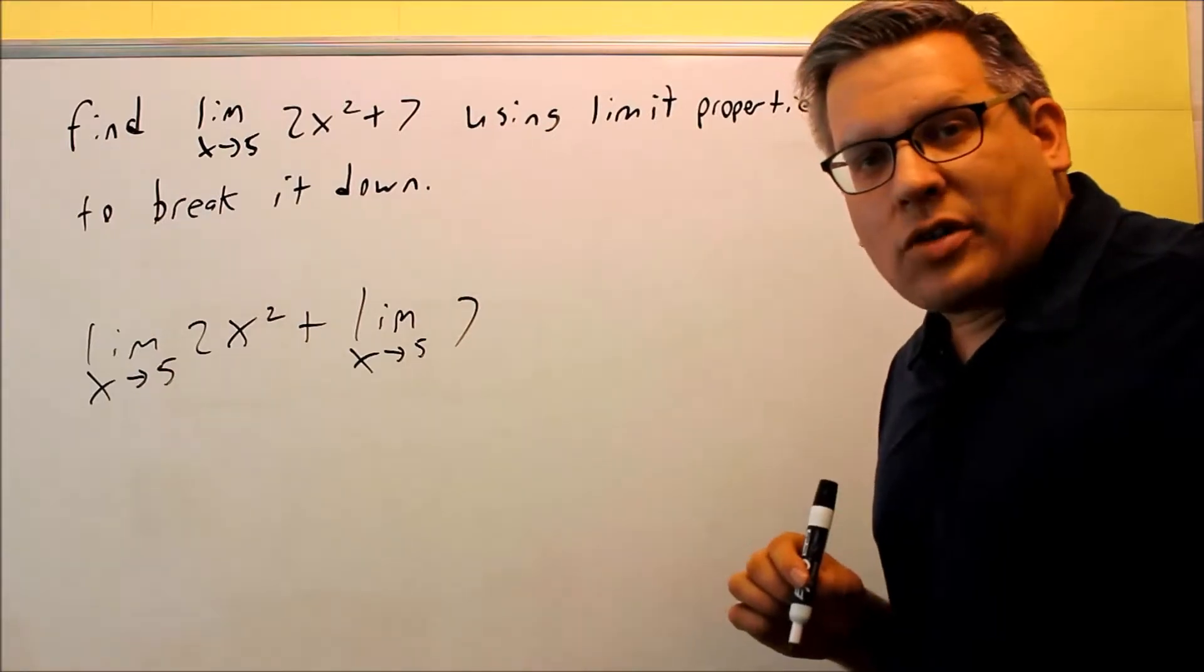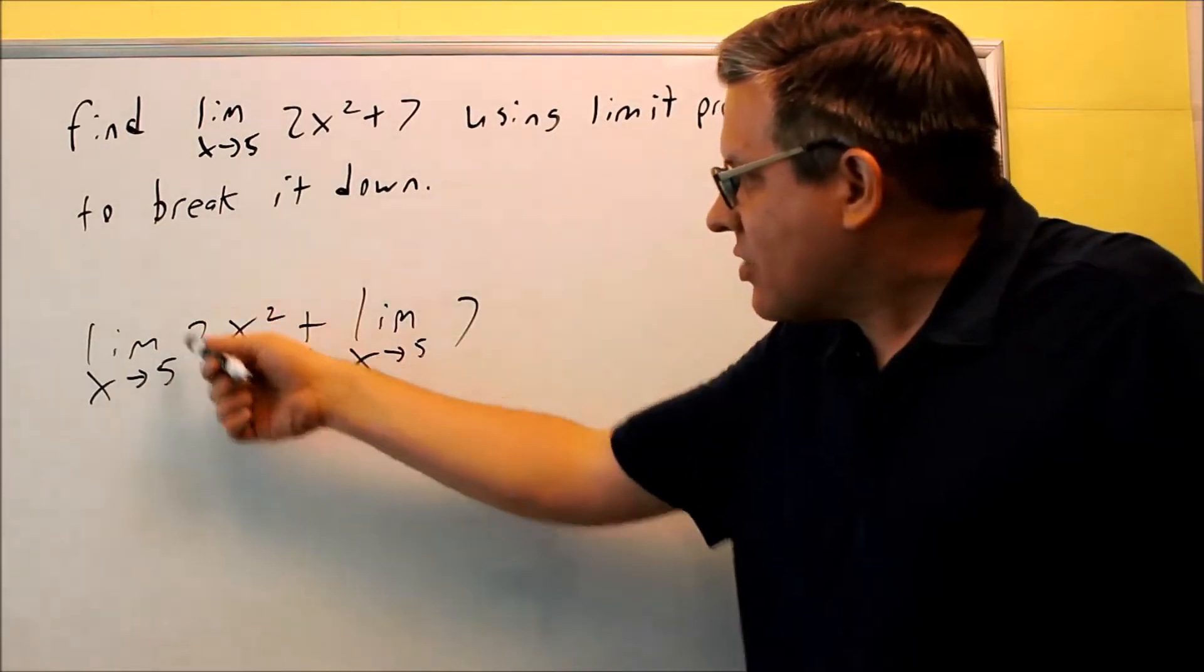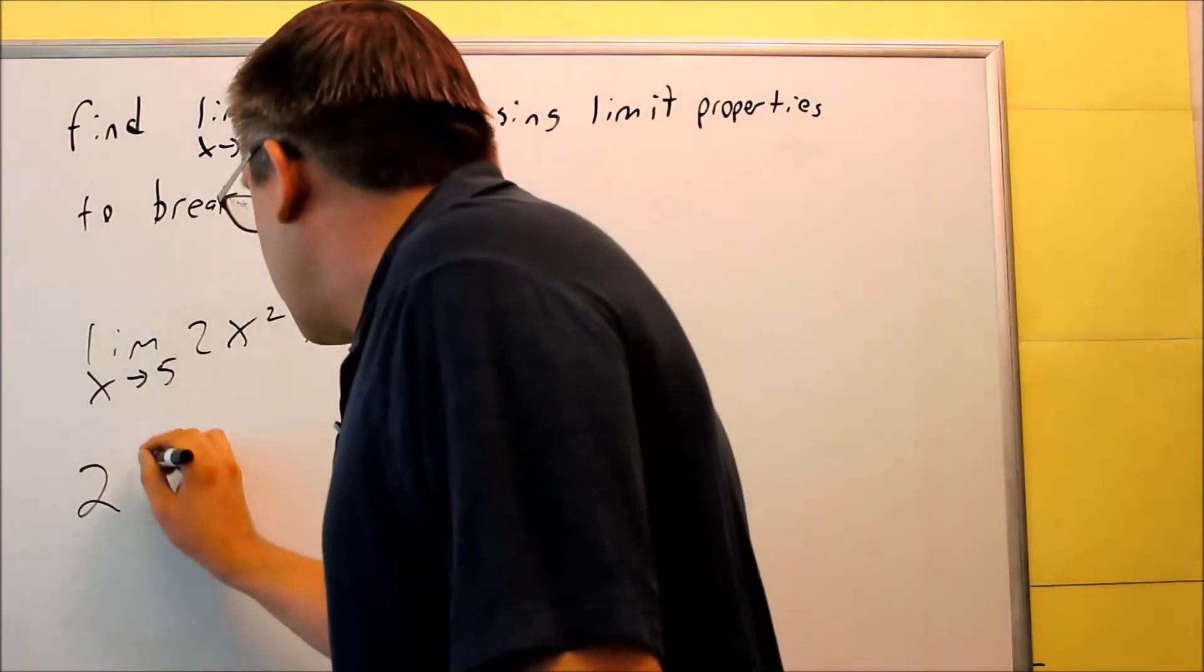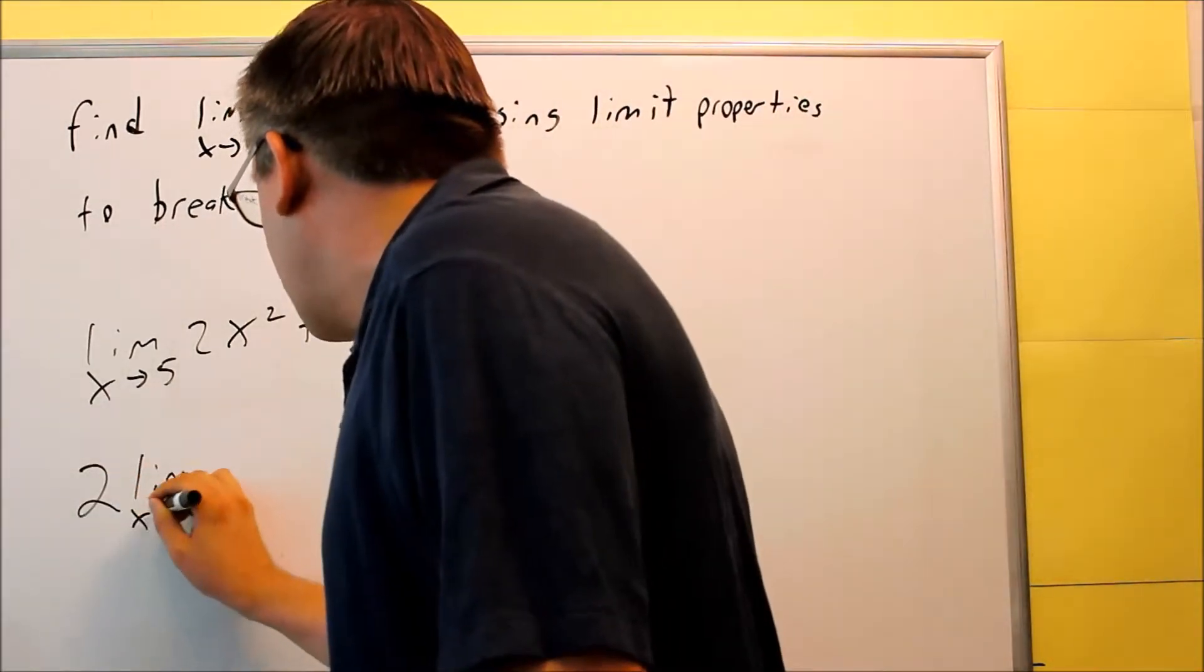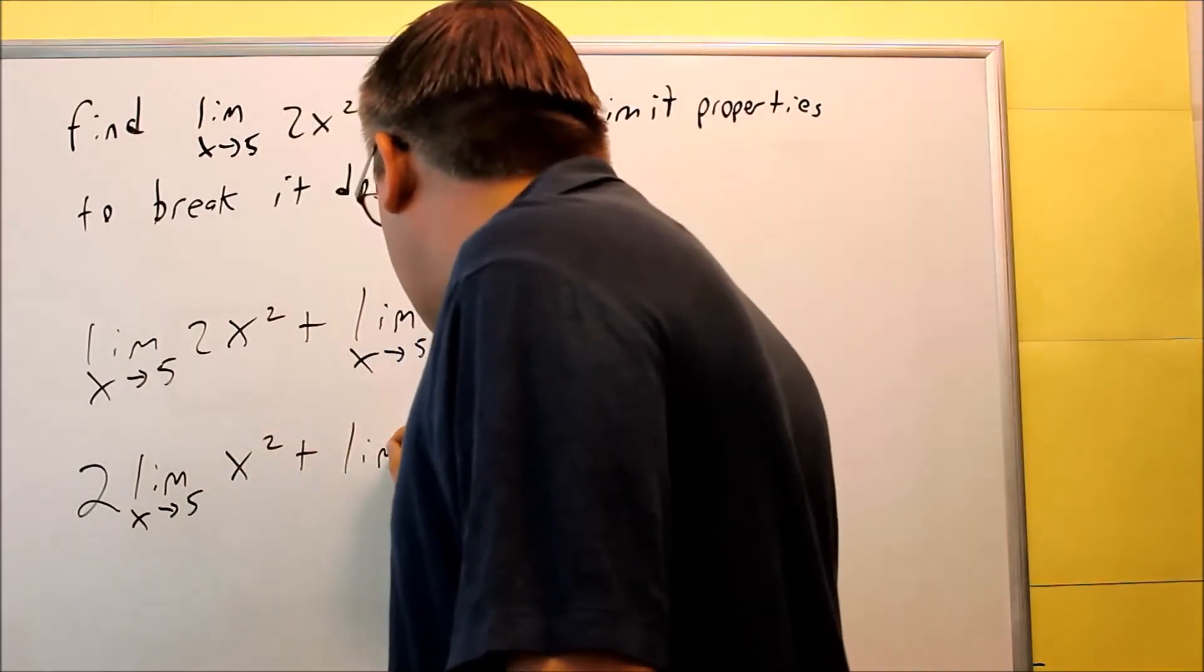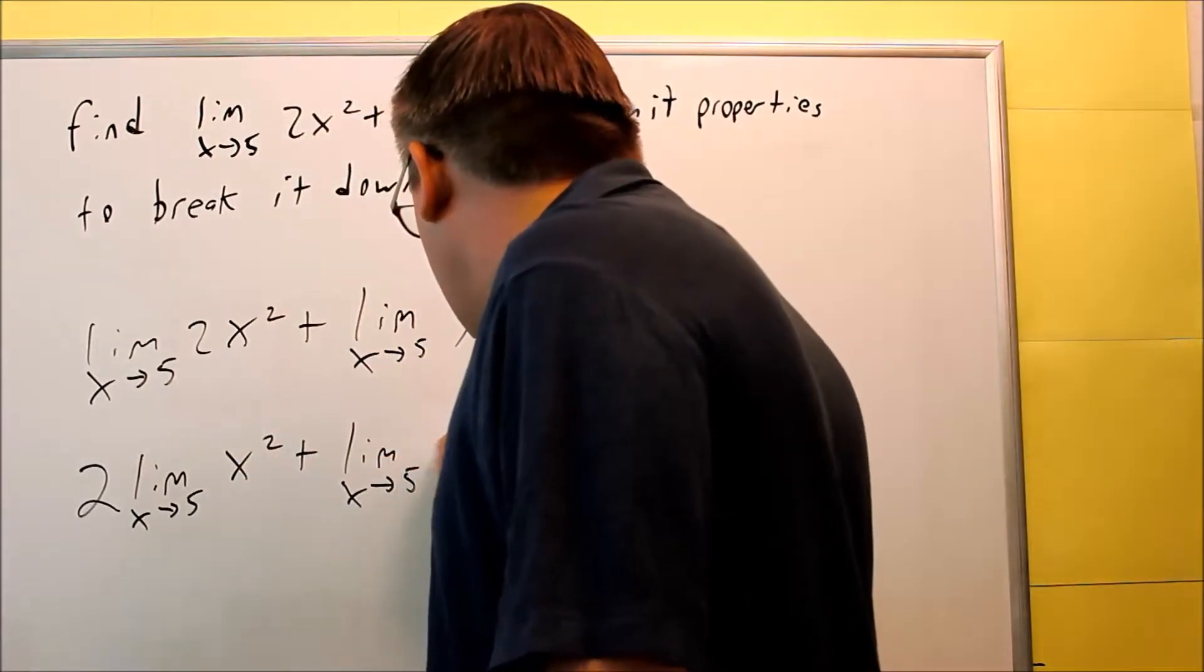Next, another property says that we're allowed to take the constant, the 2, we can move that out in front of the limit. So we'll do that next. We're going to do limit x approaches 5 of x squared, and then the rest of this is still going to be the same.